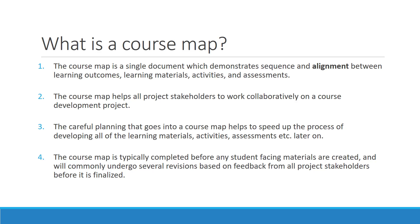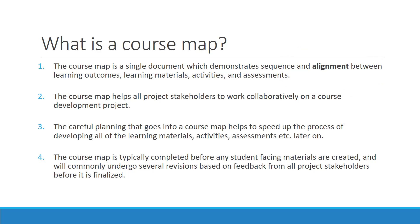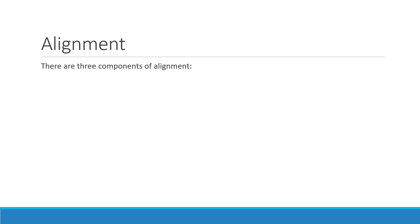With all of that in mind, I want to focus on this keyword — alignment — that I mentioned in the first point. The NLU course map is built from the ground up to demonstrate alignment, or the connection between all of the different components in a course. The concept of alignment actually has three components that you should keep in mind when you're planning the content for your course.